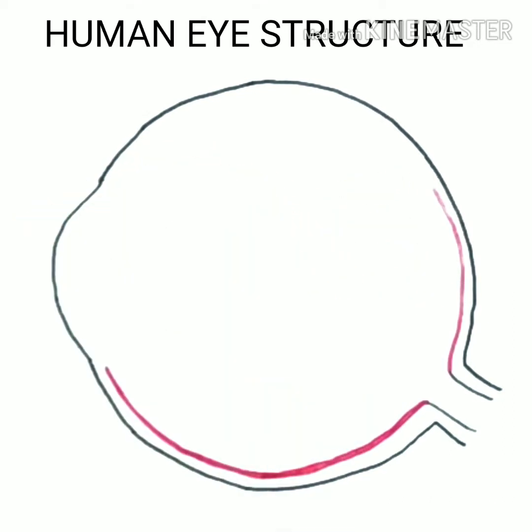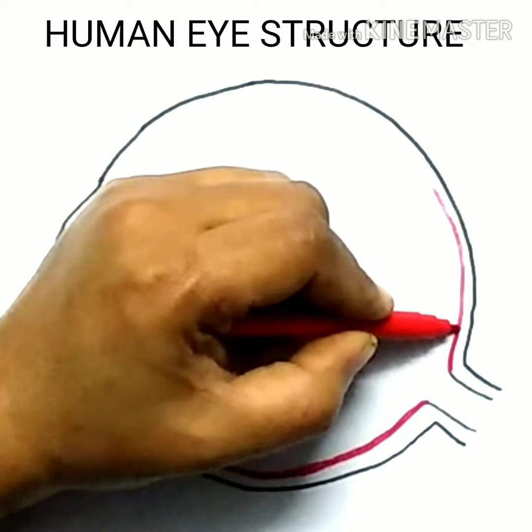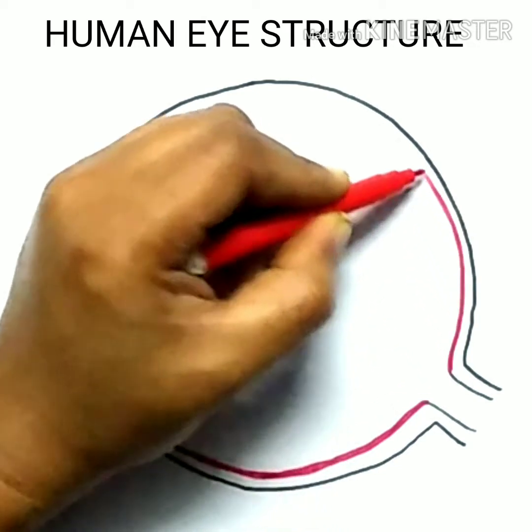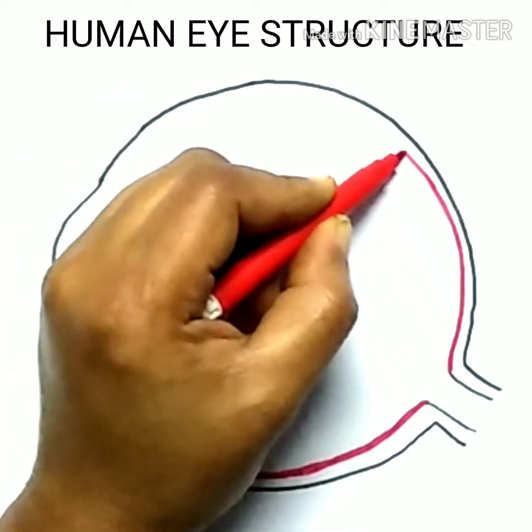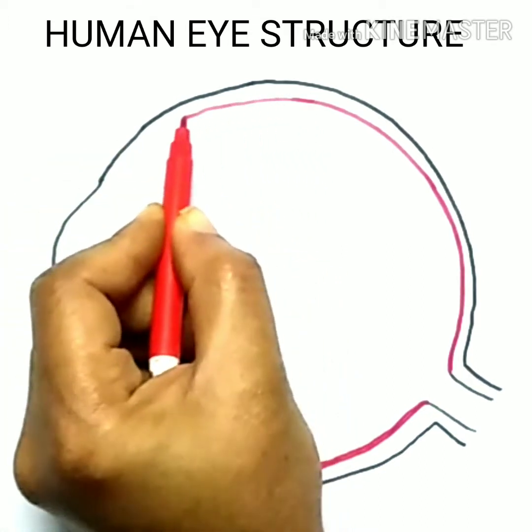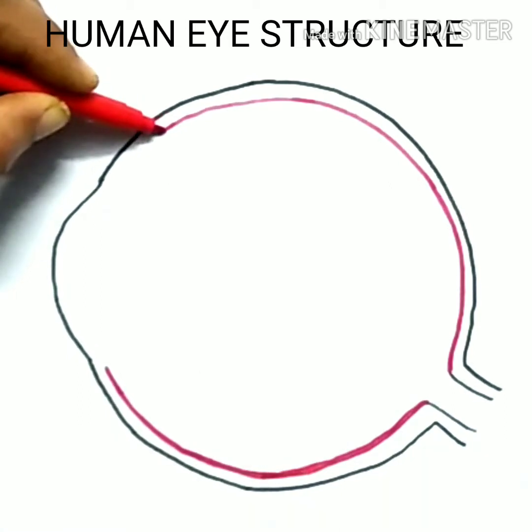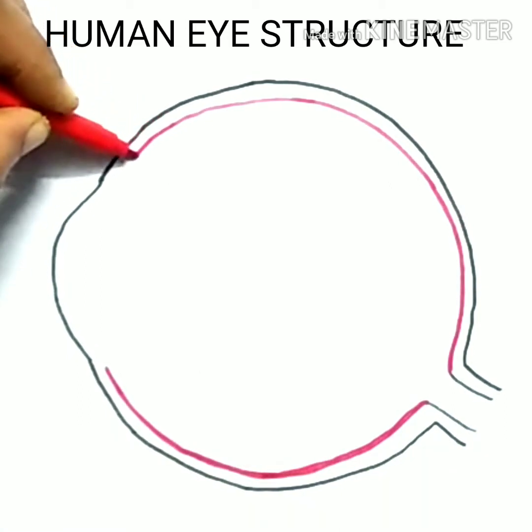Ciliary muscles: Help to change the curvature of the eye lens and hence change its focal length so that we can see objects clearly placed at different positions. Retina: Thin membrane with large number of light-sensitive cells.